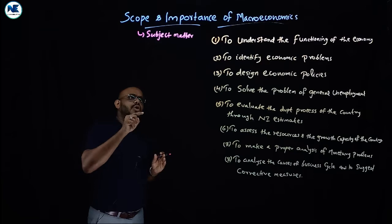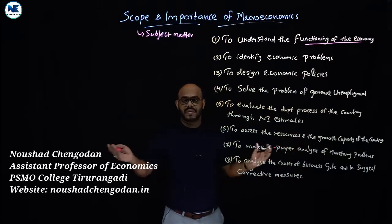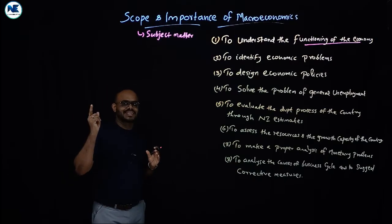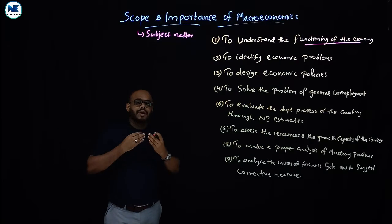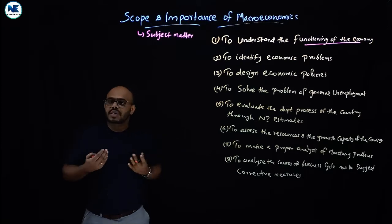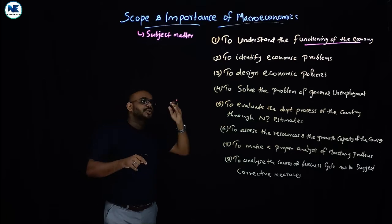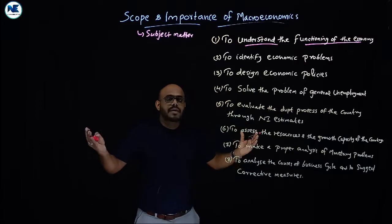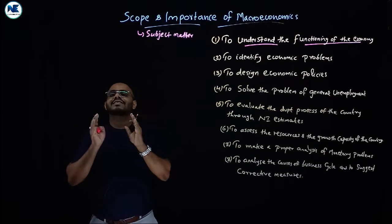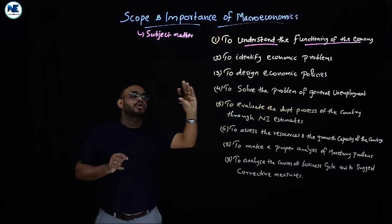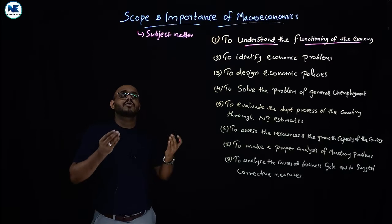The first point in the scope and importance of macroeconomics is to understand the functioning of the economy as a whole. While microeconomics studies individual parts, macroeconomics studies the economy broadly. By using the tools of macroeconomics — macroeconomic theories and policies — you can understand aggregate variables such as total saving, total investment, and total employment, and thereby understand the overall functioning of the economy.